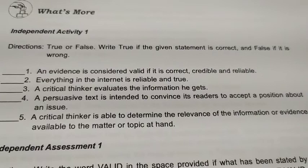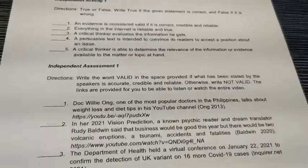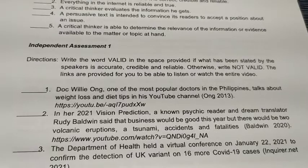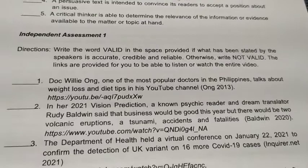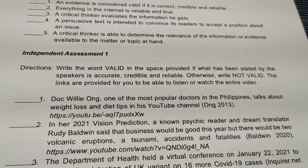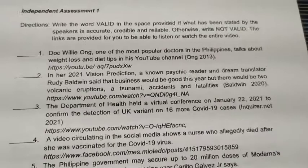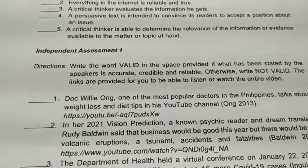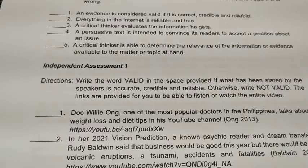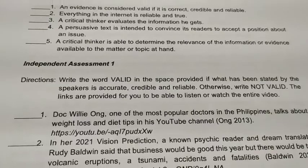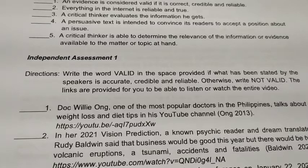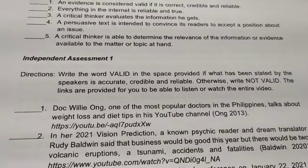For Independent Assessment 1, you will write the word 'valid' if the speakers are really accurate, credible, and reliable, then 'not valid' if the links of the videos you watched are not really based on fact. A particular claim is valid if it is based on facts and not combined with opinion. But if it's opinion mixed with fact, then it is not valid. So if it's a fact — valid; if it's an opinion — not valid.